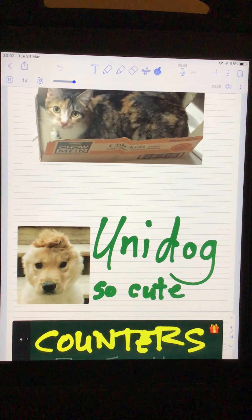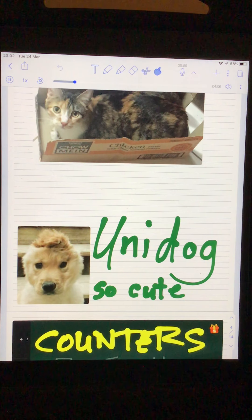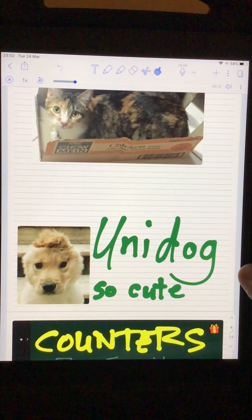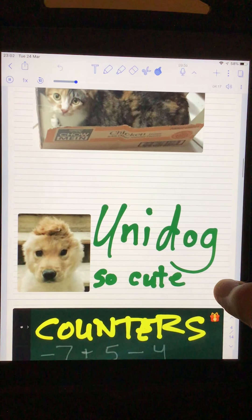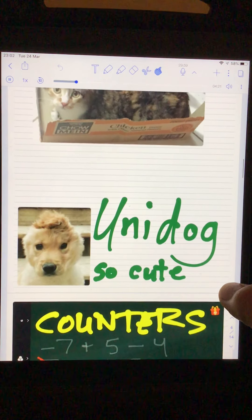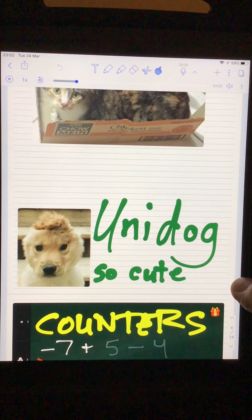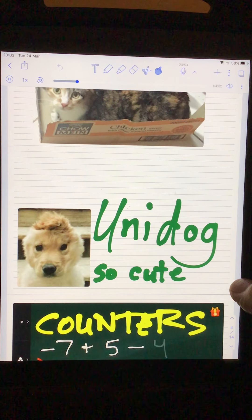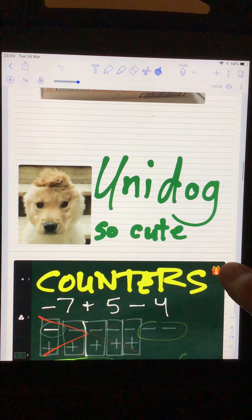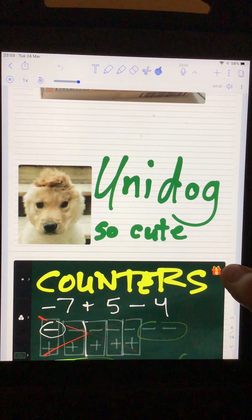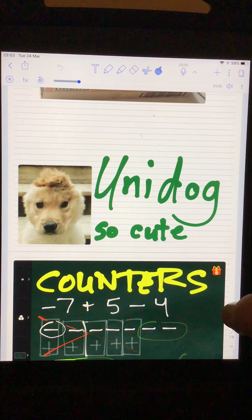Talking about negative numbers, if we have troubles with negative numbers, there's a number of different strategies you can try to use to help you figure out the correct answers. Let's take a look at a couple of those. Counters is the simplest one. For example, it's usually better for smaller problems. If you had negative 7 plus 5 minus 4, something like that, all you really have to do is make little symbols or counters.